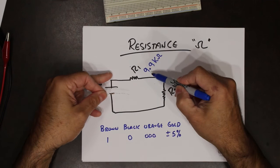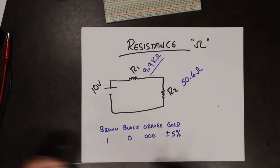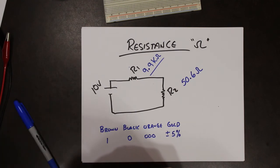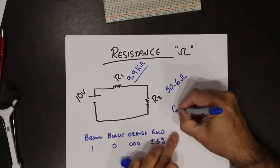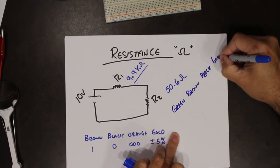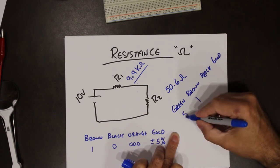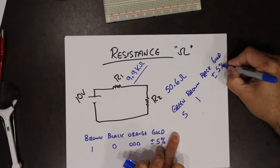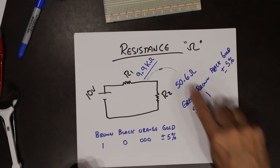Let's take the other resistor. The colors are green, brown, black, gold. That was five, one, and no more zeros — black means zero zeros. So this is supposed to be 51 ohms plus or minus five percent. Measuring at 50.6 ohms — again, within tolerance. So what it's supposed to be and what it actually measures are two slightly different things, but within tolerance.